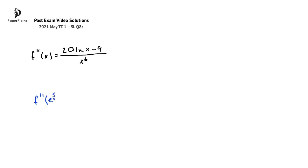So when we substitute, we get 20 times ln e to the power of 1 fourth minus 9, divided by e to the power of 1 fourth to the power of 6.